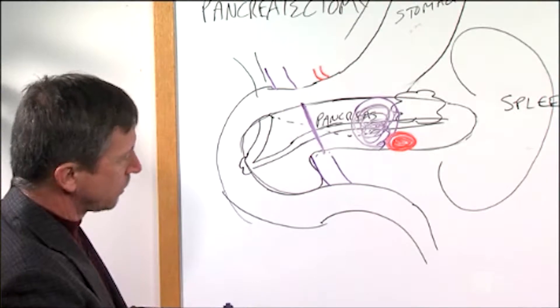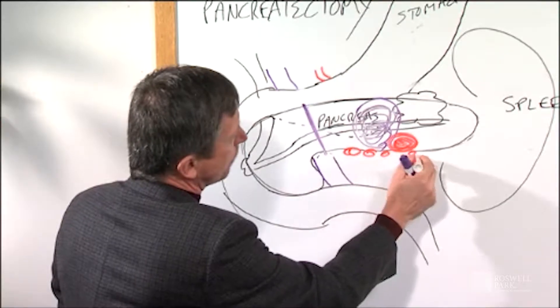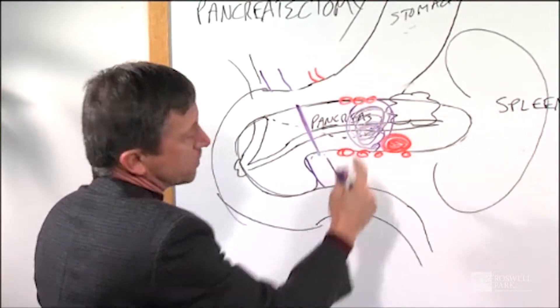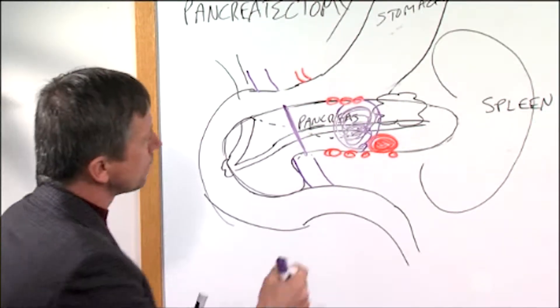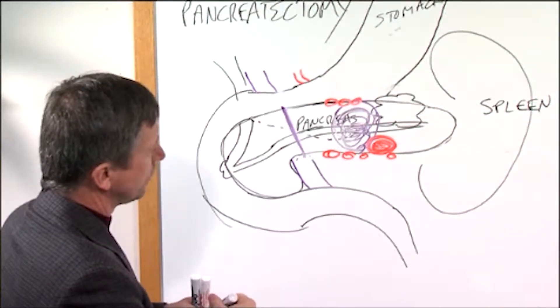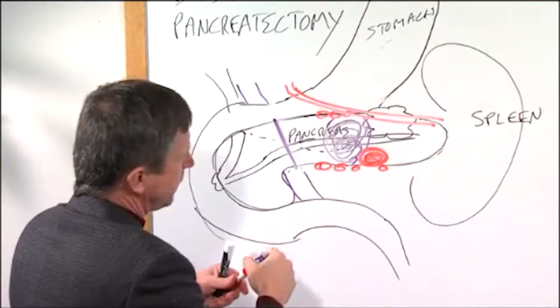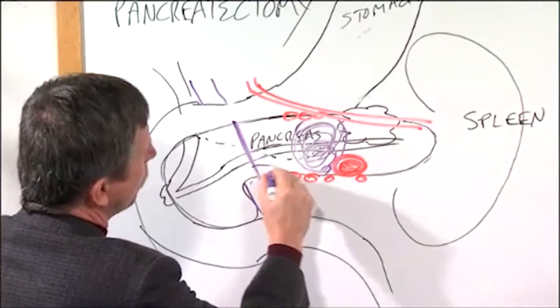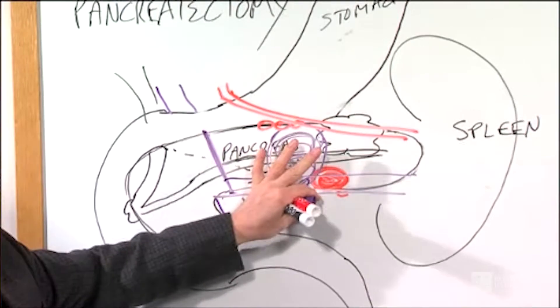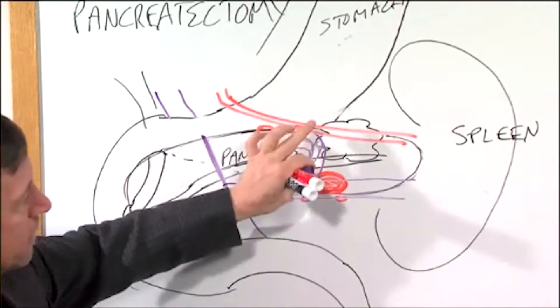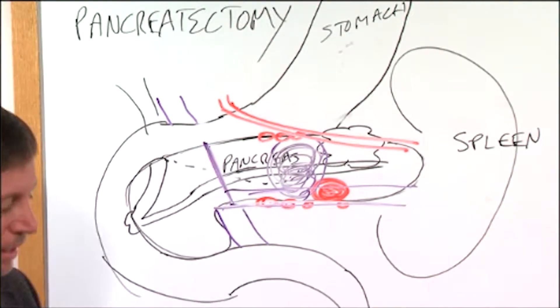The first reason is that there are a lot of lymph nodes around the tail of the pancreas, and if we remove the spleen as well as the tail of the pancreas, we'll remove more lymph nodes which will be tested by the pathologist. The other reason that the spleen oftentimes has to be removed is because the blood vessels that go to the spleen—the artery that goes to the spleen and the vein that drains the blood back from the spleen—run right behind the pancreas. In order to get the tumor out and to remove the lymph nodes, you would have to remove the artery and the vein that goes to the spleen. Obviously, if the spleen doesn't have blood flow, it can't survive.